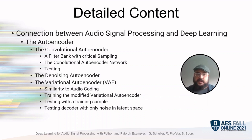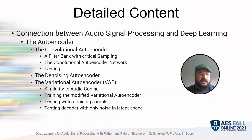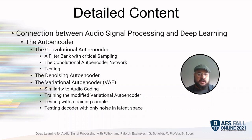We then cover a variational autoencoder and its similarity to audio coding, followed by training the modified variational autoencoder, and testing it with a training sample and testing the decoder with only noise in the latent space.